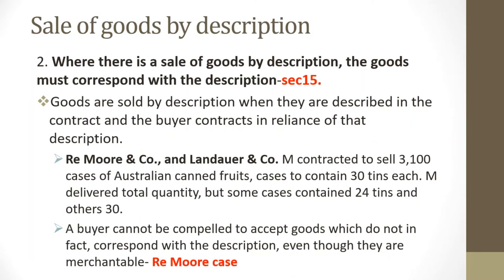Section 15 is another key section: if a sale of goods is by description, these goods must correspond to that description. For example, if you buy 100 boxes of sanitizers and are told each box contains 30 bottles, but upon delivery some boxes contain only 24 bottles, those goods do not correspond to the description. The relevant case for this section is also noted on screen.